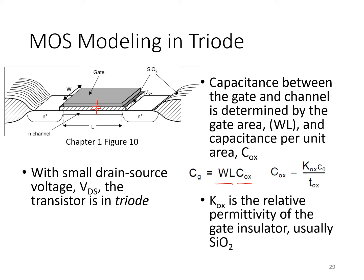That constant C_ox depends on the dielectric constant of silicon dioxide and the thickness of the gate insulating layer. There would be other terms as well that capture overlap between the gate and source or drain regions, as well as parasitics due to nearby metal layers, contacts to gates, drains, and sources that should be considered as well.